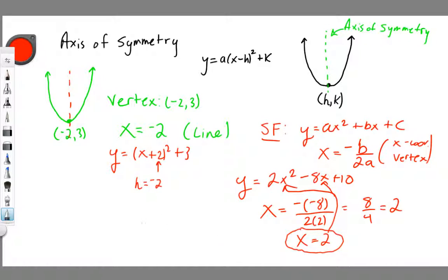So y equals 2 times 2 squared minus 8 times 2 plus 10. We have 2 squared is 4 times 2 is 8 minus 16. That's negative 8 plus 10 is 2. So the vertex would be (2, 2).